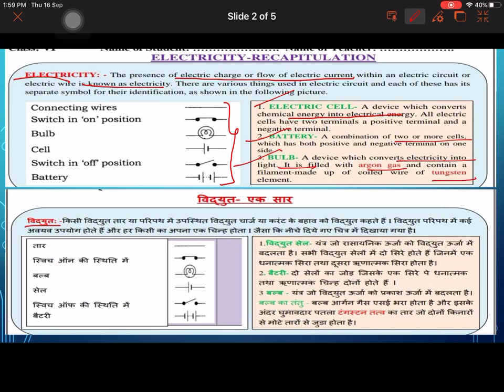So the vidhut cell or electric cell converts chemical energy called rasainik urja into electrical energy called vidhut urja. A battery is made by connecting two or more cells together.